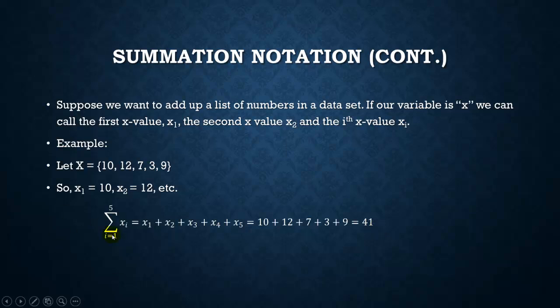So again, this summation i equals 1 to 5 of xᵢ is just a shortcut way of writing, let's add up all these numbers, 10 plus 12 plus 7 plus 3 plus 9. It doesn't actually help you in the calculation at all, it's just a shortcut way of writing what you want to do.